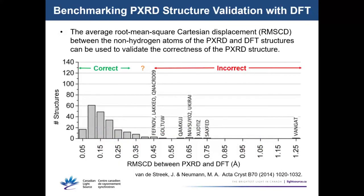The agreement between PXRD and DFT can be used to validate the correctness of a crystal structure. Researchers looked at 200 published PXRD crystal structures and compared the average RMS displacement in atomic positions between the PXRD and DFT models. Correct crystal structures generally have an RMS difference below about 0.3 Å. Above 0.4 Å these examples were generally incorrect — the powder diffraction solution was wrong or had significant problems. Values between 0.3 and 0.4 Å are a gray area requiring careful examination.